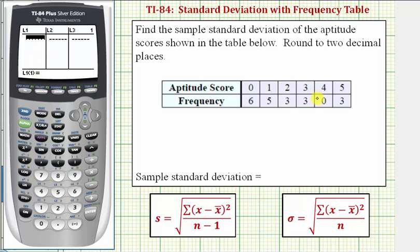And now I'll enter the aptitude scores, which are zero, enter, one, enter, two, enter, and so on.